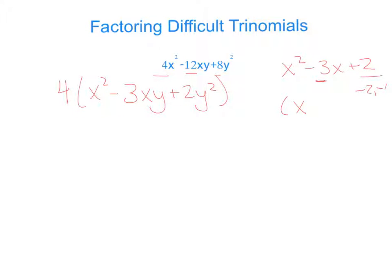So we would have x minus 2, x minus 1. The only thing we have to take into account is that y again. So we're going to say 4x minus 2y and x minus 1y or just y.